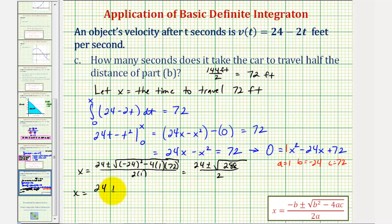So we have 24 ± 12√2, divided by 2. Breaking this up into two separate fractions, we have 24/2 ± 12√2/2. So we have x = 12 ± 6√2.